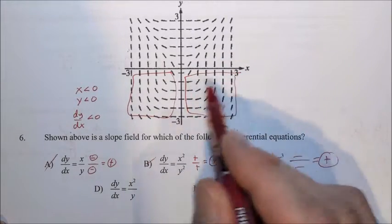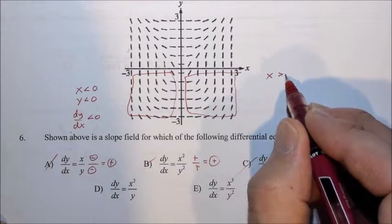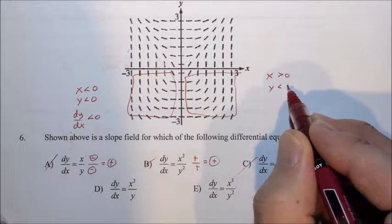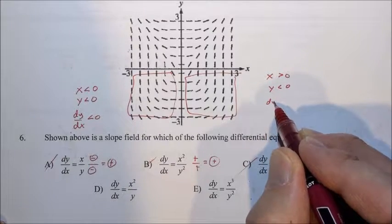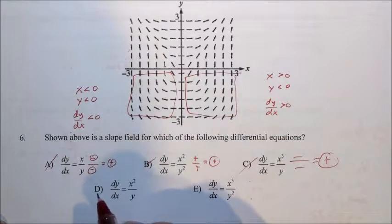But quadrant number three will not help us anymore. So let's move over to quadrant number four. In quadrant number four, all of the slopes are positive. X is positive, Y is negative, but dy/dx is positive. All of these slopes are positive.